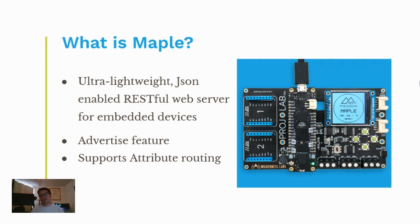Another feature that MAPLE has is attribute routing, so it accepts absolute and relative URLs to send HTTP requests.